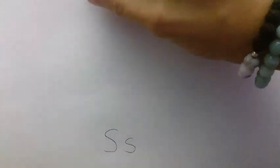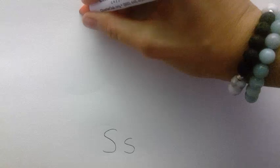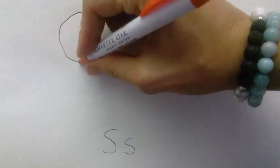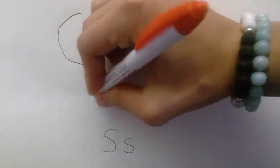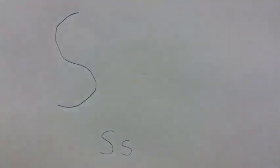Let's start with the uppercase S. Start at the top of your page, draw a curve that looks like a C, and then draw a backwards curve at the bottom. And you drew an S.